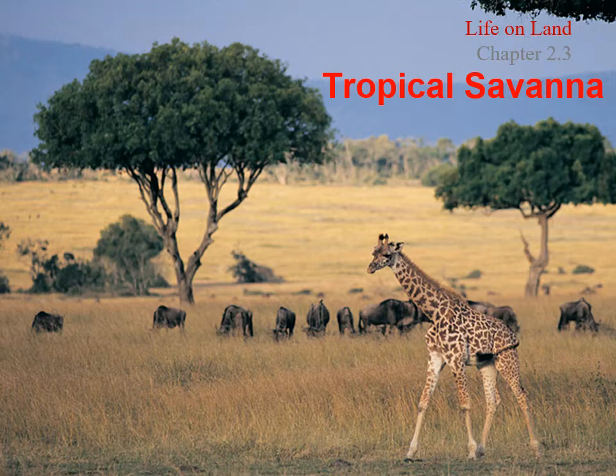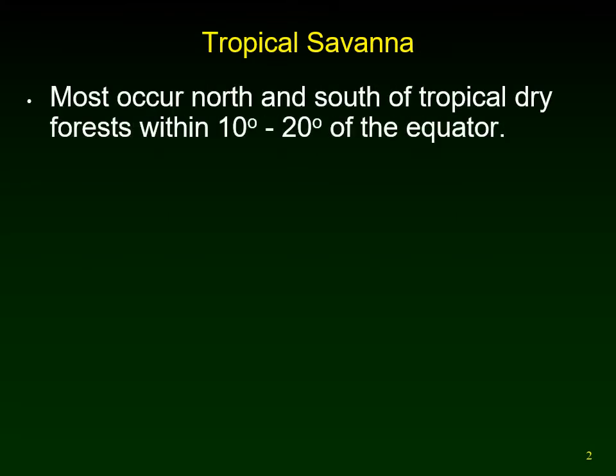The tropical savannah — this is like the land of the Lion King. The savannah is found within the areas between 10 to 20 degrees of the equator, which is also where we find some tropical forests. The differences between whether you'll find tropical forests or tropical savannahs depends on factors such as soils. They occur north and south of the tropical dry forest, within 10 to 20 degrees of the equator.